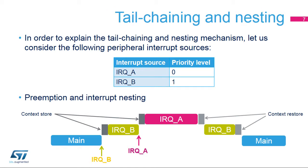The NVIC provides several features for efficient handling of exceptions. When an interrupt is being served and a new request with higher priority arrives, the new exception can preempt the current one. This is called nested exception handling. The previous exception handler resumes execution after the higher priority exception is handled.